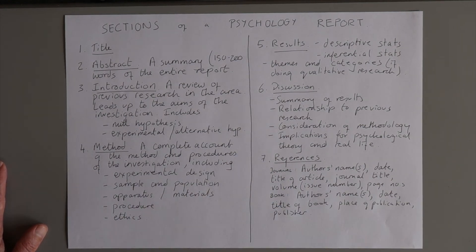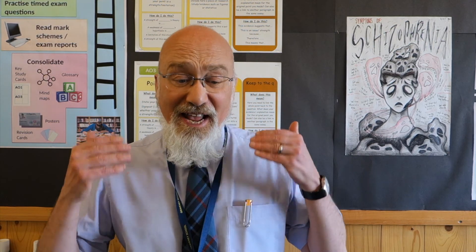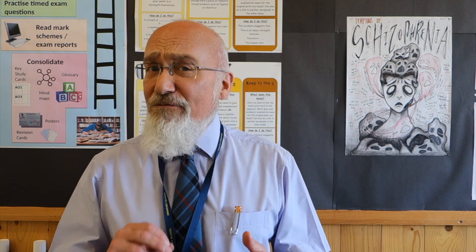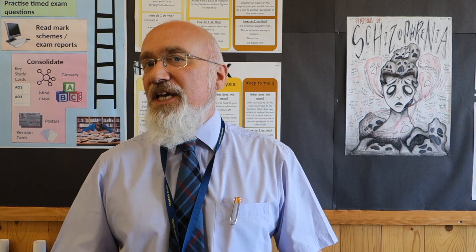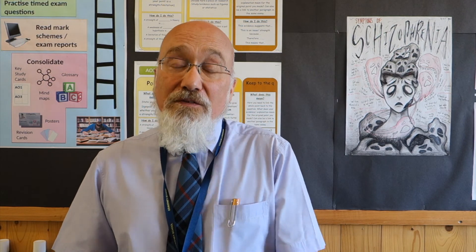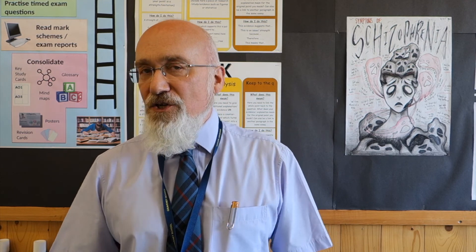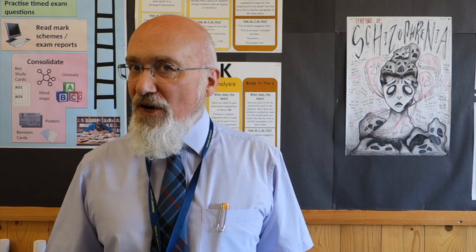The final section is the appendices. This is where you put all the detailed material that doesn't need to be read in full by everyone but needs to be included for completeness — for example, the full questionnaire used, and the raw data showing the scores of every individual participant. You can summarise these things in the main body of the report; the appendices are there for completeness, and not everyone will read all of them.